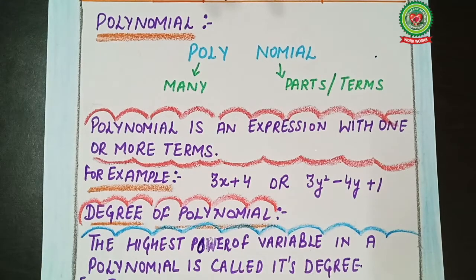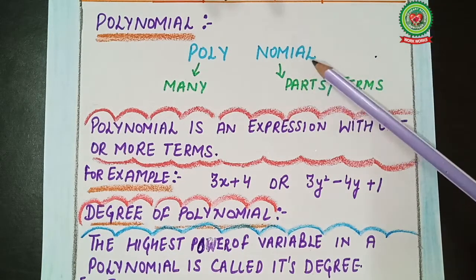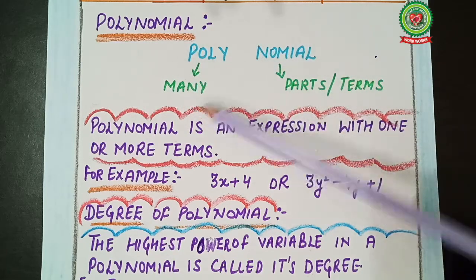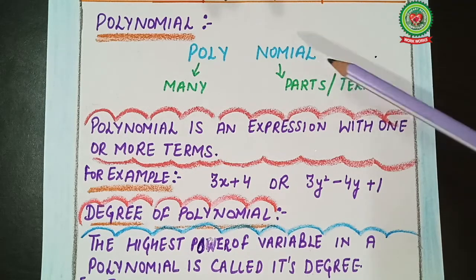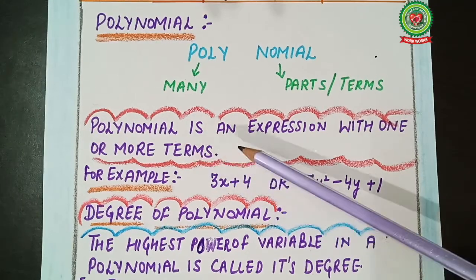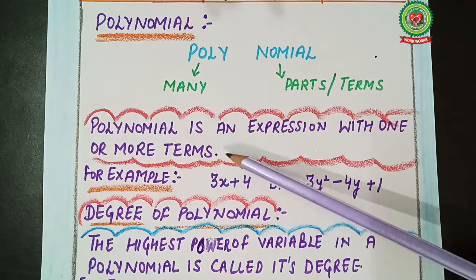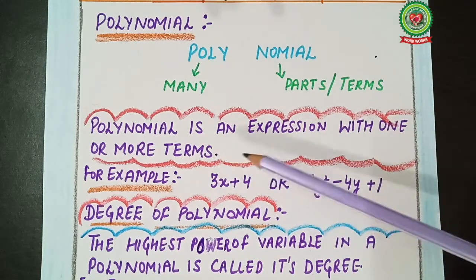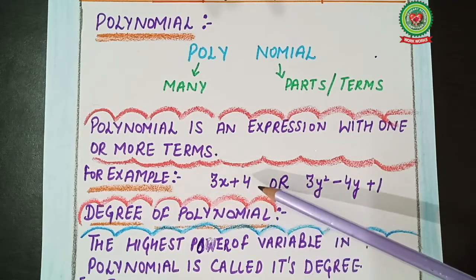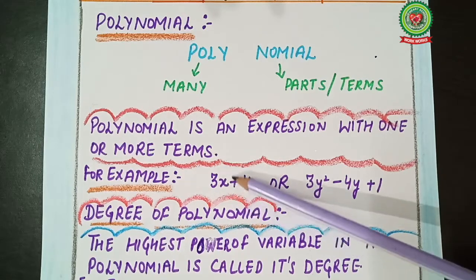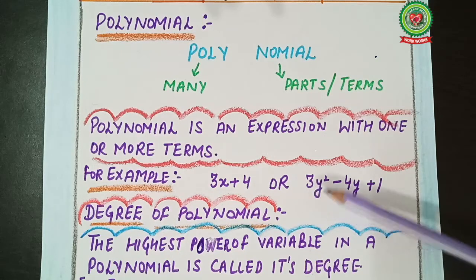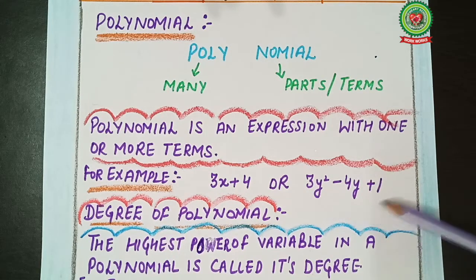Now we'll talk about polynomials. The word polynomial is divided into two parts: 'poly' means many, and 'nominal' means parts or terms. So a polynomial is an expression with one or more terms. For example, 3x + 4 is a polynomial with the variable x (one variable). Another example: 3y² − 4y + 1 is a polynomial with the variable y.